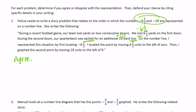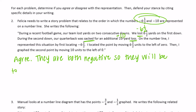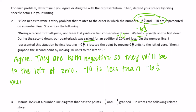They are both negative, so they will be to the left of zero. And we can say that negative ten is less than negative six and a half because it is further to the left.